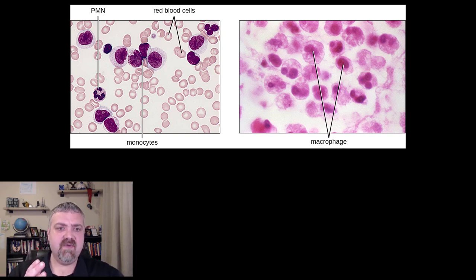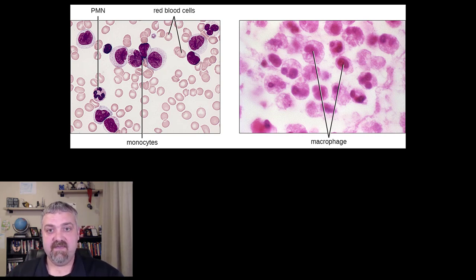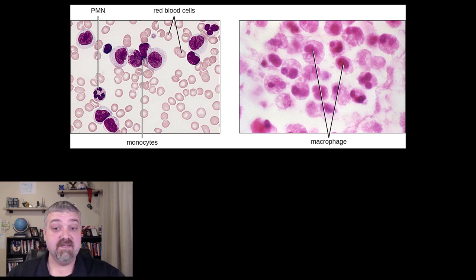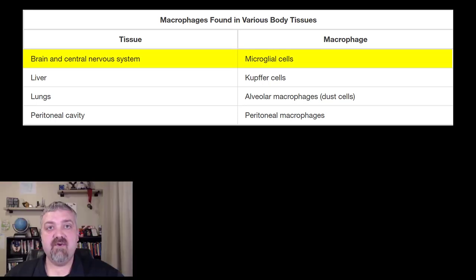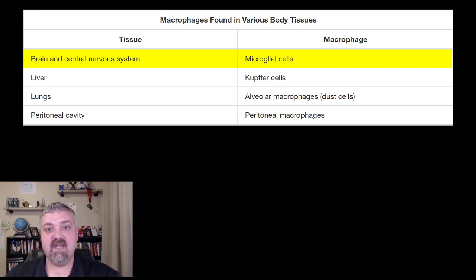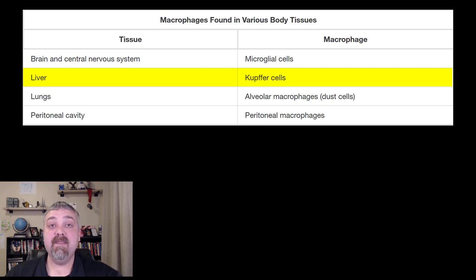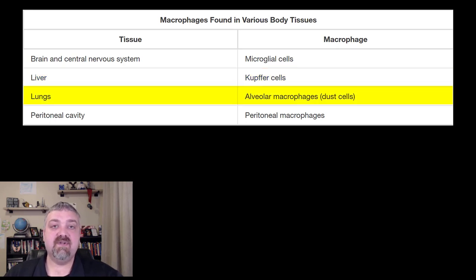What I have on the screen is monocytes and macrophages. Remember, monocytes are a class of white blood cells that drive to where these cells are needed and then become tissue macrophages. Some cells are just going to be called fixed macrophages or free macrophages, but some do have names. For example, microglial cells are the macrophages of the nervous system. Kupffer cells are the macrophages in the liver. Alveolar macrophages, or dust cells, are in your lungs.